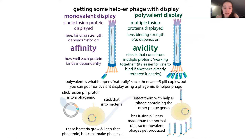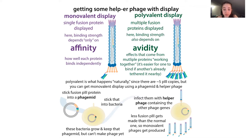You can also do things like introduce amber suppression mutations to make soluble versions. You introduce a stop codon that can be recognized as not a stop codon if you grow it in certain bacterial suppressor strains — it'll keep going through and make the whole fusion protein on the phage. But if you put it in non-suppressor strains, the stop codon will be recognized and you get a soluble version of the protein made, which tends to transfect better in various applications.